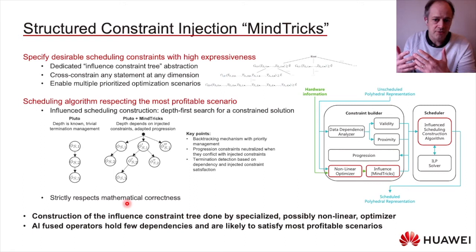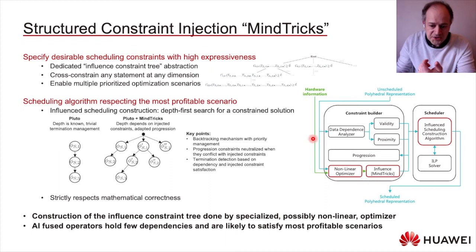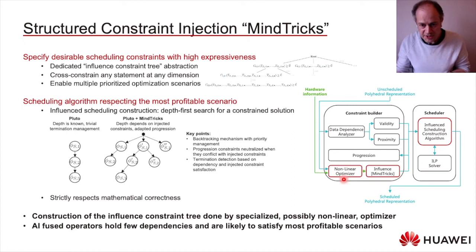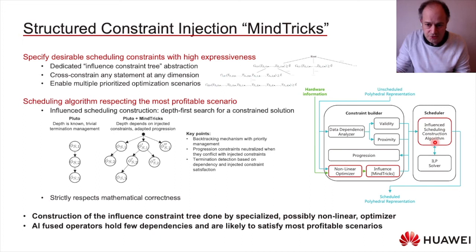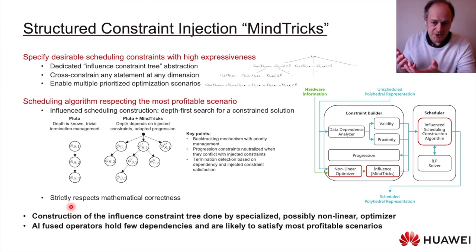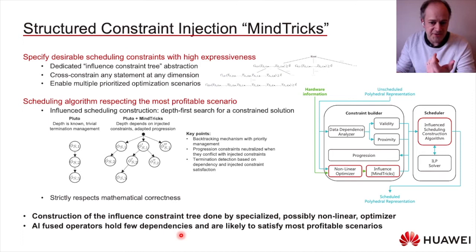All in all, the mind tricks system opens a way to consider the target architecture. A possibly non-linear optimizer takes the optimization decision and generates an influence constraint tree, which is then processed by the revisited scheduling construction algorithm. Over-constraining the scheduling may not always be feasible, but in the context of AI fused operators with only a few dependencies, our experience is extremely positive. And if the additional constraints are entirely infeasible, the technique falls back to the original Pluto algorithm.